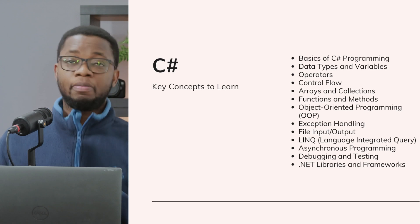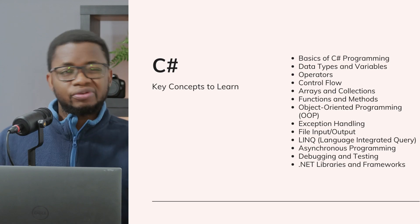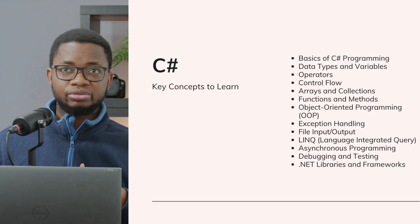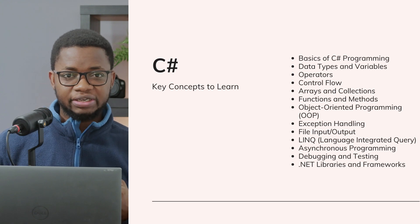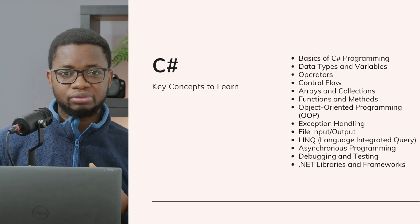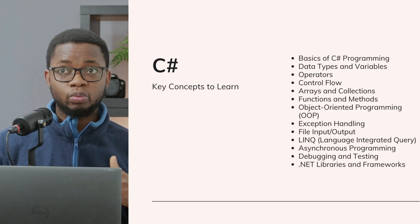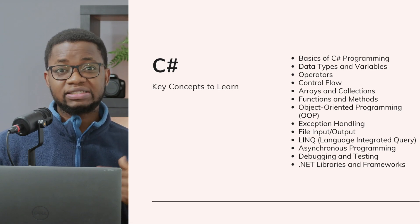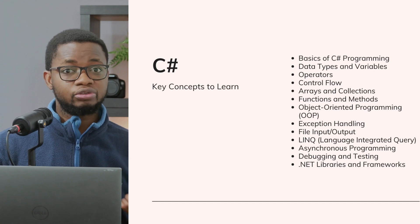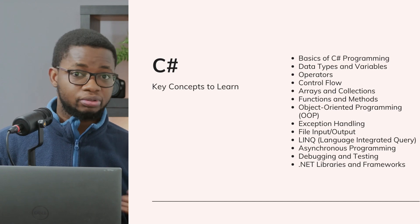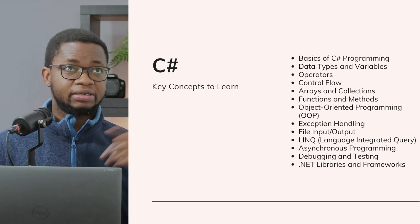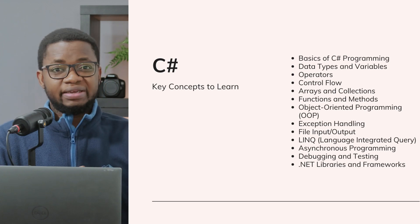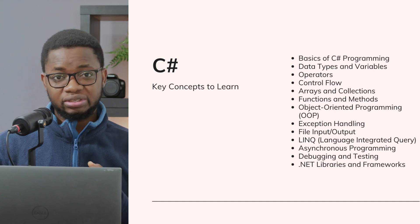One of my favorite things in C# — and in many related languages — is object-oriented concepts. Here you dive into classes, objects, access modifiers, encapsulation, inheritance, and polymorphism. After that, since errors are inevitable when writing code, you'll learn exception handling: how to manage errors with try-catch blocks and other advanced methods. Then you learn about file input and output, and then Language Integrated Query, also known as LINQ, where you explore how to filter, select, and sort data.